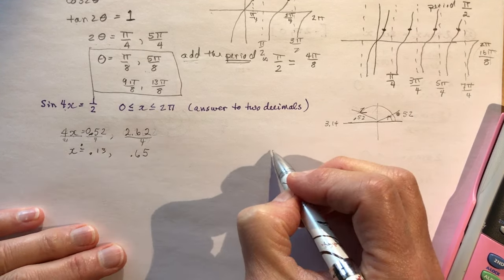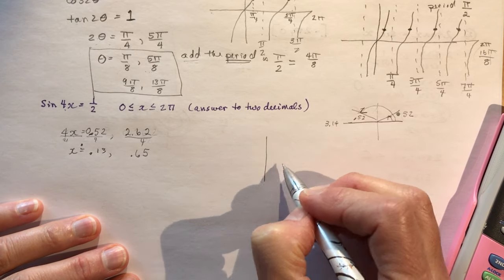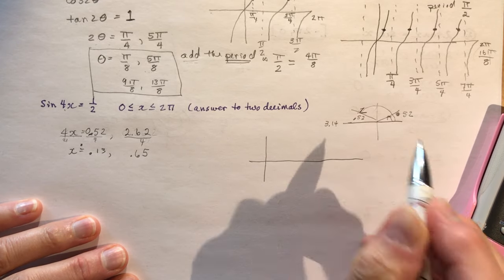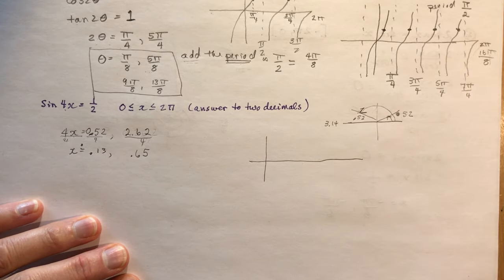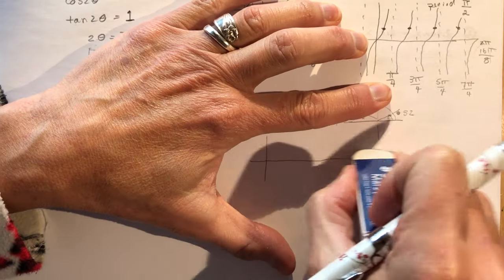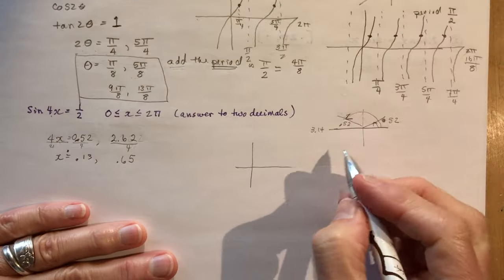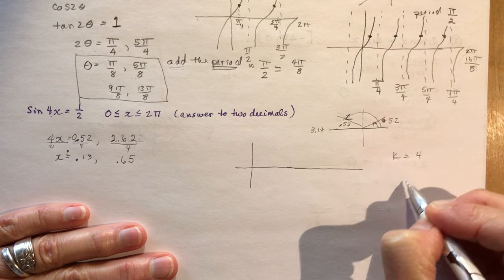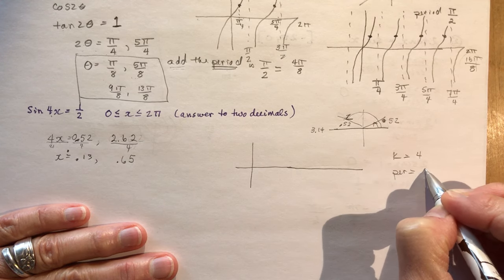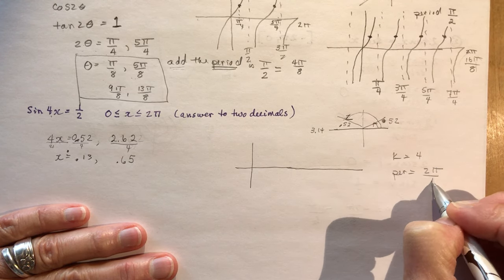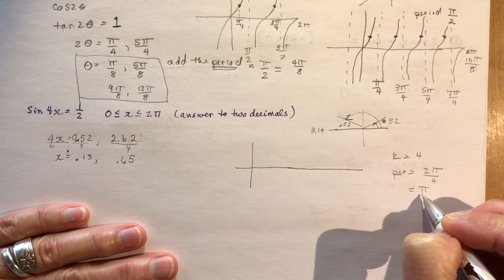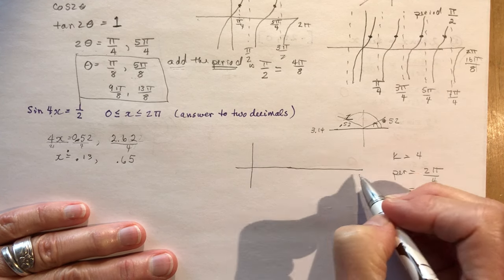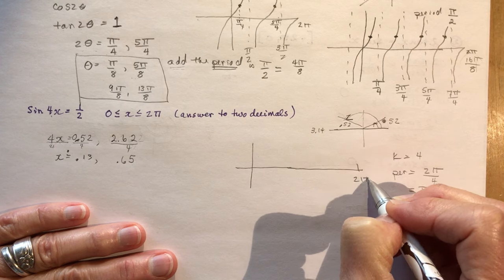Because you know what sine 4x looks like. What's the period? What's the period if k is 4? k equals 4. Period equals 2π over k. So the period is only π over 2. Oh my goodness, π over 2. So in two π's, let's go π. Here's π over 2. Here's 3π over 2.